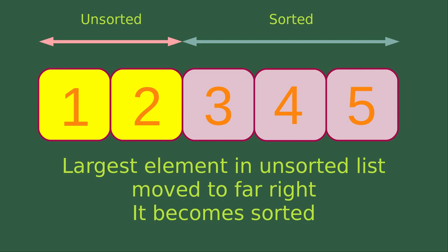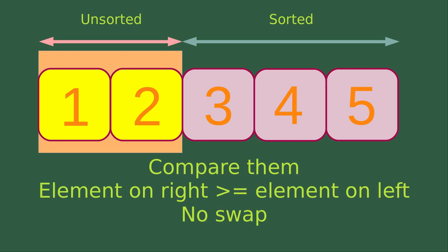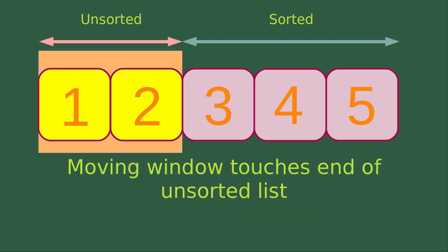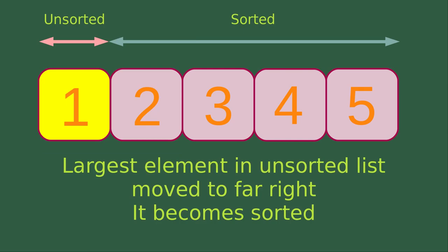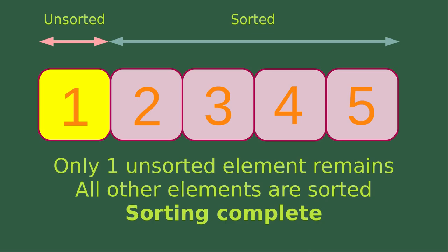I have two numbers that are unsorted. I move my window to the two numbers in the unsorted list and compare them. The element on the right-hand side is larger than or equal to the element on the left-hand side, so no swap is needed. The moving window already touches the end of the unsorted list, so I can put the largest element, number 2, to the very beginning of the sorted list. Only one unsorted element remains, so all other elements are already sorted. The sorting process is now complete.